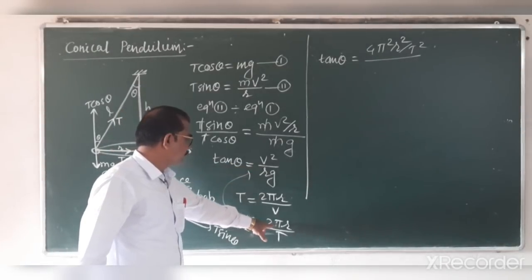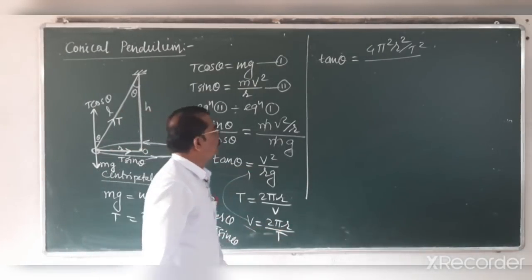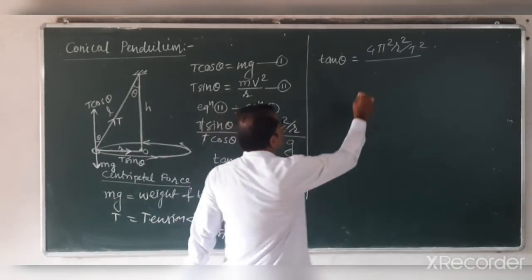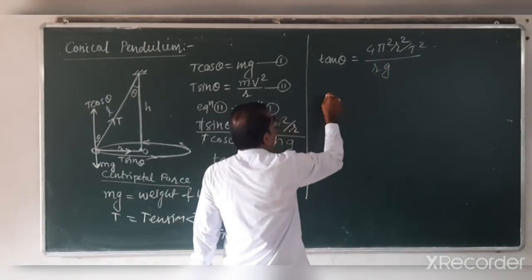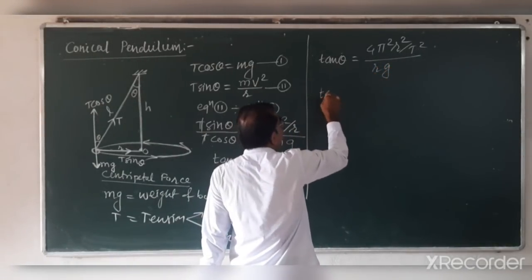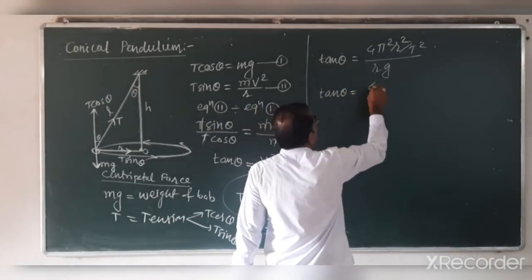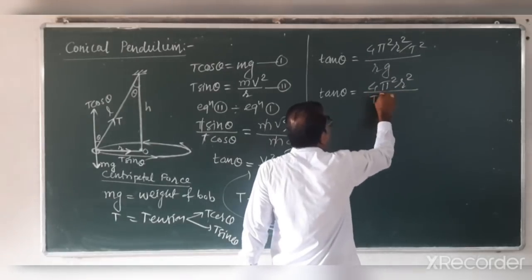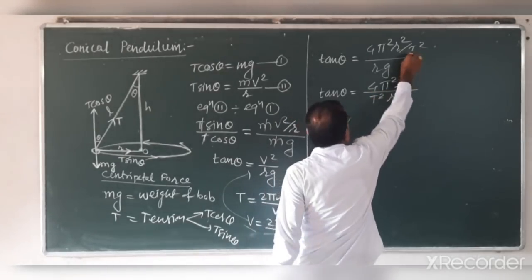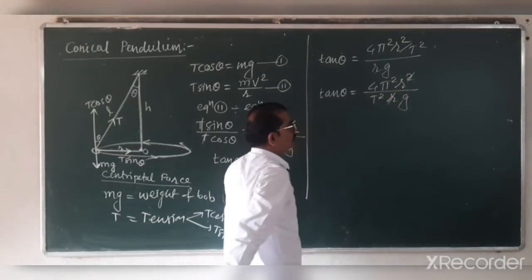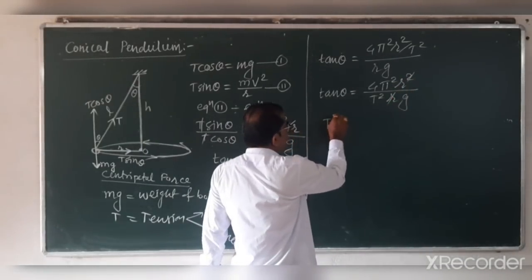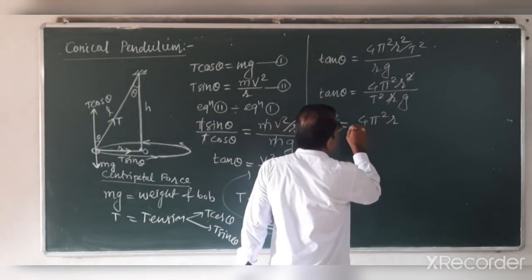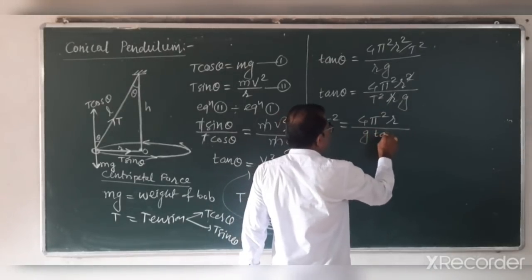Substituting v squared equals 4 pi squared R squared upon T squared into tan theta equals v squared by Rg, we get tan theta equals 4 pi squared R squared upon T squared Rg. The R cancels, giving T squared equals 4 pi squared R upon g tan theta.